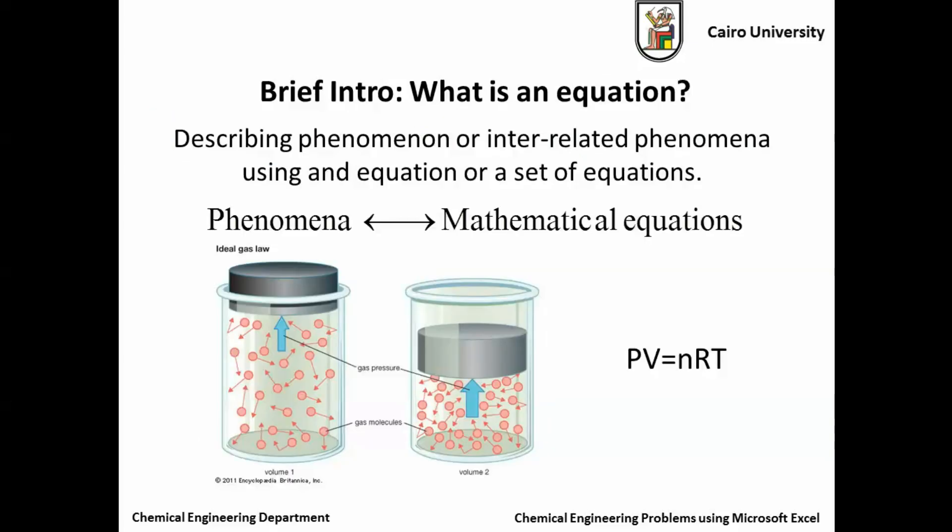Another really important thing to keep in mind is what's an equation. It's really important to know that an equation is just a description of a phenomenon that's happening—maybe one equation or a set of equations to describe this and how it behaves. One important and really famous equation is the ideal gas law, PV equals nRT, which shows there's a relation between pressure, volume, and temperature.